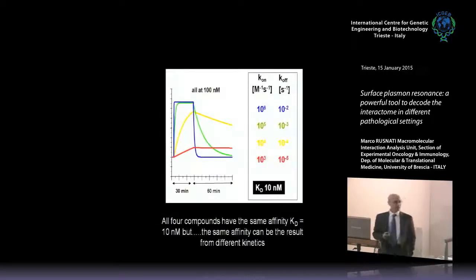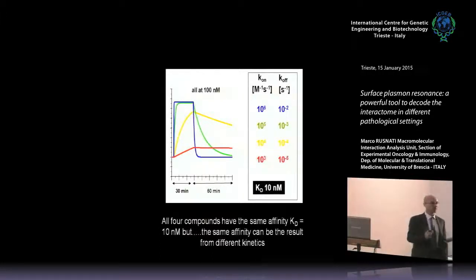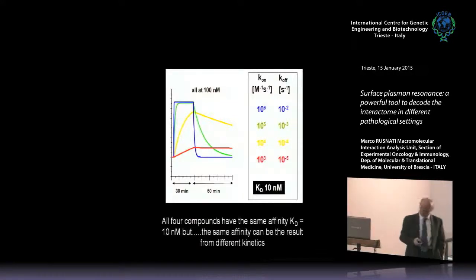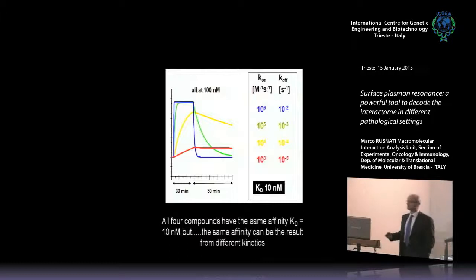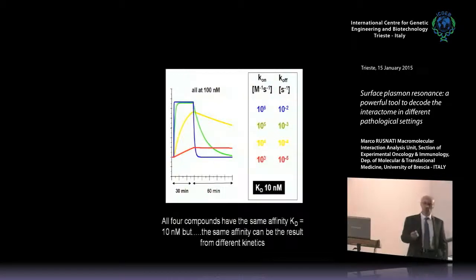Usually we are asked to calculate the affinity, because this is considered the most important parameter in an interaction. But I will try to show you that K-D is important, indeed, but it is not enough to characterize an interaction.